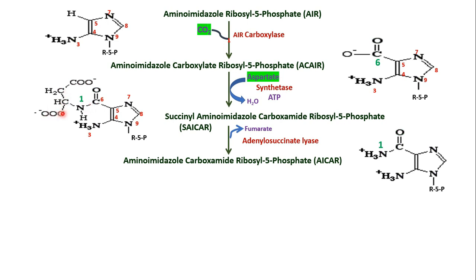Since we only want the amino group — N1 — the succinyl portion is removed. With the enzyme adenylosuccinate lyase, the fumarate molecule is eliminated, leaving only the carboxamide group. The product is amino imidazole carboxamide ribosyl 5-phosphate (AICAR).